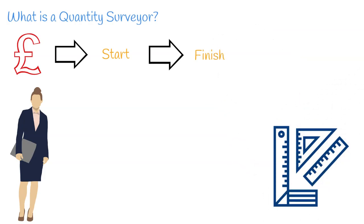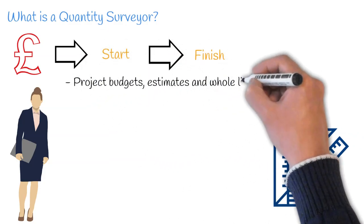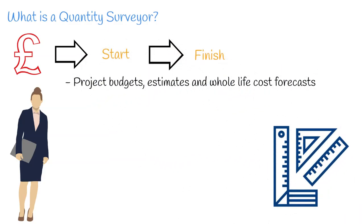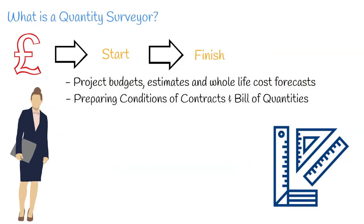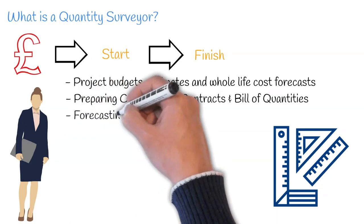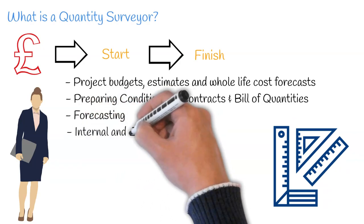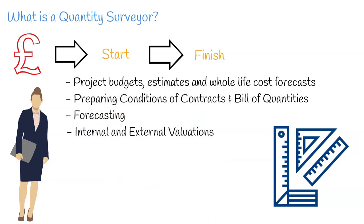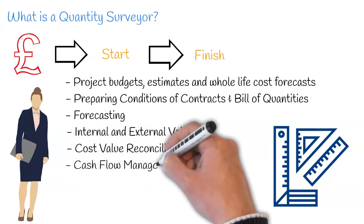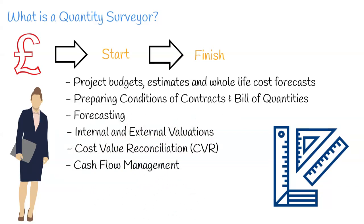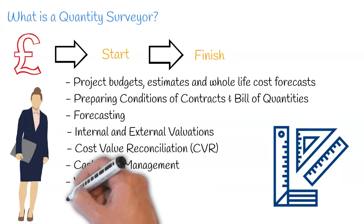The main tasks of a quantity surveyor include, but are not limited to: setting project budgets, estimates and whole life cost forecasts; preparing documents such as conditions of contracts and bill of quantities used for procurement of subcontractors; forecasting project cost to completion; internal and external valuation of work carried out; cost value reconciliation; cash flow management; variations; and finally, final accounts.